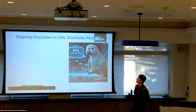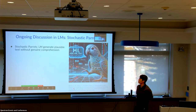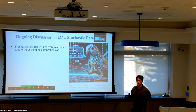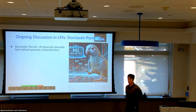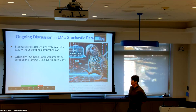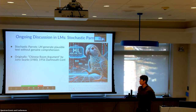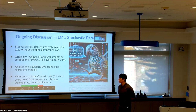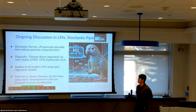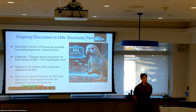There has been ongoing discussion about language models in NLP for a long time. 'Stochastic parrots' argues that language models generate plausible text without actual general comprehension or real reasoning — going all the way back to the 1980s Chinese room argument, and even before that, back to 1956. This argument applies to all modern language models using autoregressive architectures.